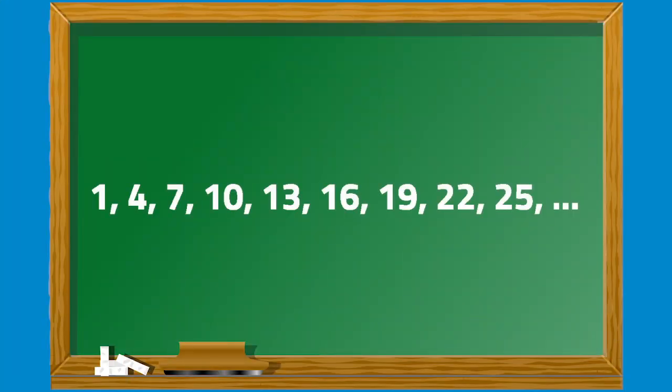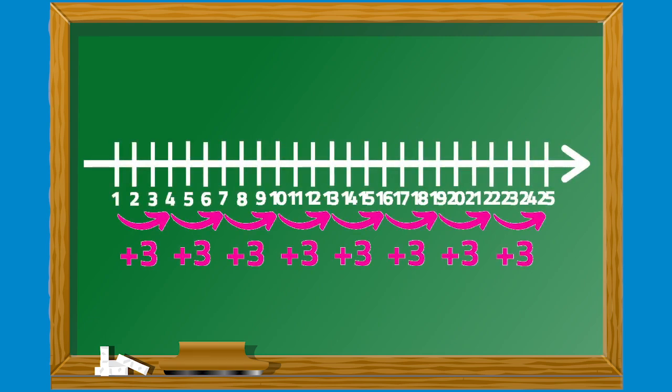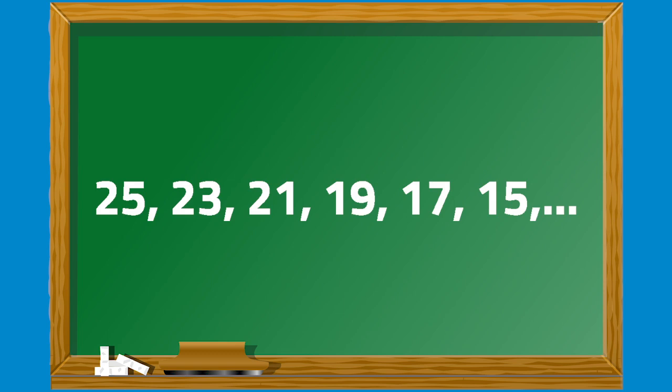Let's look at this example. What is the common difference in this arithmetic sequence? This sequence has a common difference of 3 between each number. We can use a number line to check that adding 3 to each term will give us the next terms. In another example, the common difference in this arithmetic sequence is negative 2 because the pattern is continued by adding negative 2 each time.